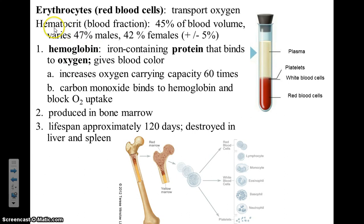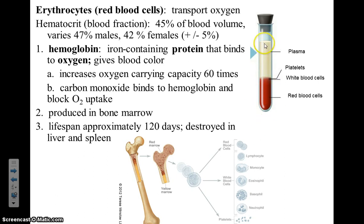The amount of red blood cells compared to whole blood is called the hematocrit. This is a blood fraction. The higher the hematocrit fraction, the higher the amount of red blood cells compared to the whole blood sample.